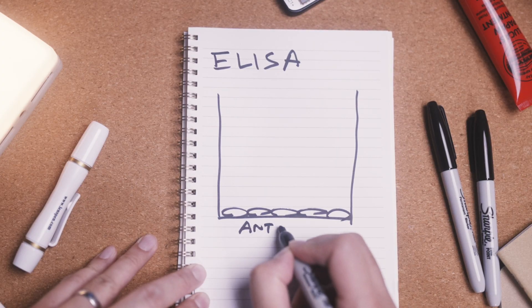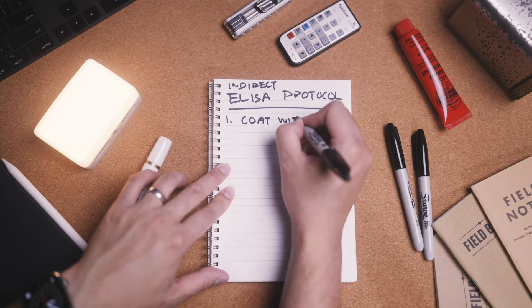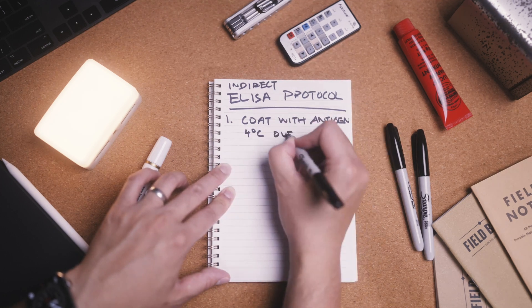The antigen can be a range of things including whole cells, viruses, or specific hormones in the case of the pregnancy test, which are mixed with a coating buffer and applied to the wells.